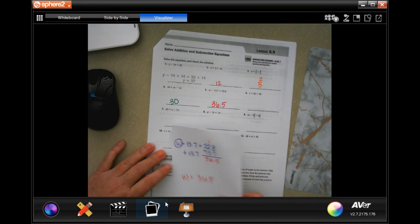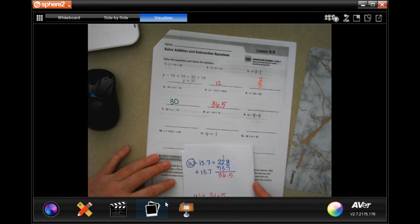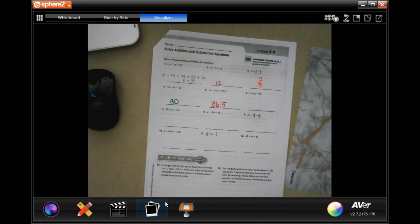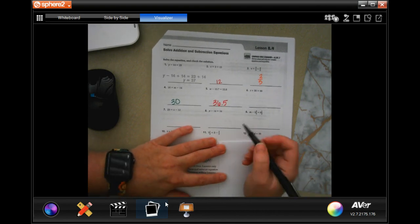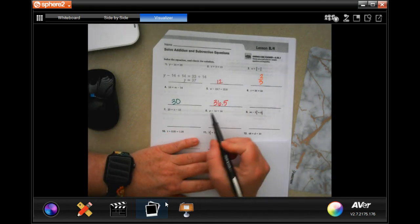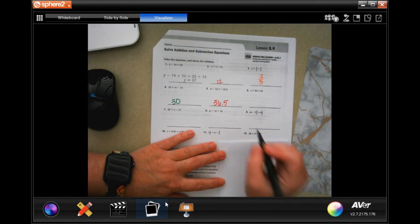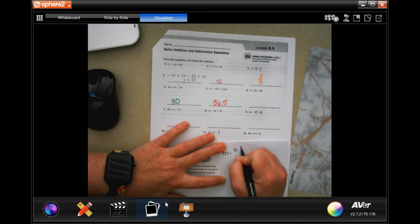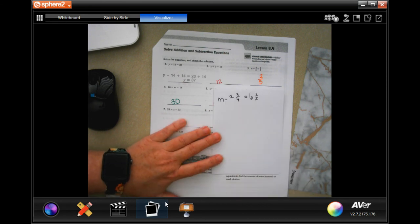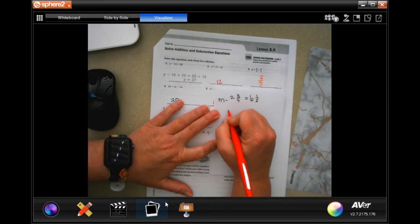You guys are going to finish. We'll go down and do number 9 since it's been a little while since you guys have worked with fractions, and I will give you that little bit of grace. So we're going to go ahead and do number 9. You guys are going to do 6, 7, and 8. I am going to do number 9 with you. m minus 2 and 3 quarters equals 6 and 1 half.